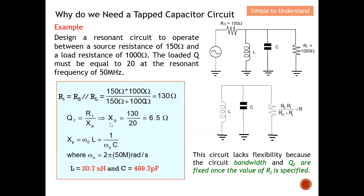With XP known, I can find the L and C values. Since XP = ωL = 1/(ωC), and ω = 2πf with the resonant frequency of 50 megahertz, I can calculate the inductor value as 20.7 nanohenries and the capacitor value as 489.7 picofarads.